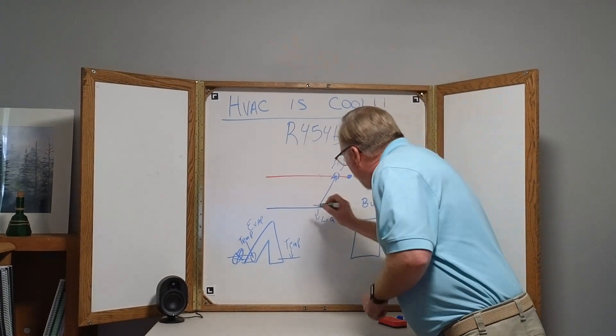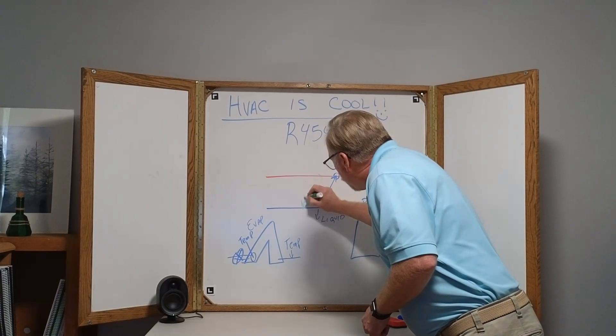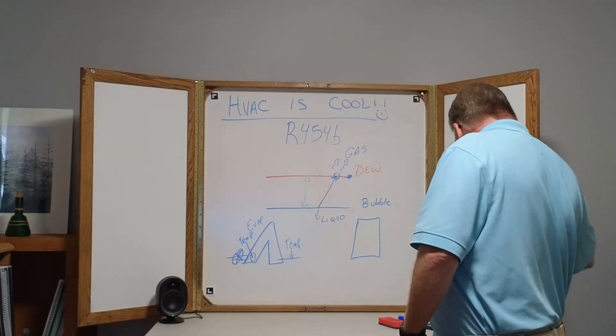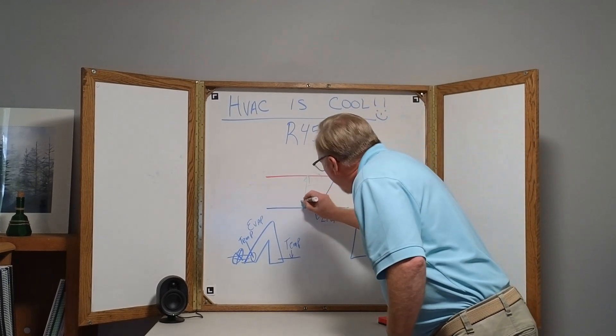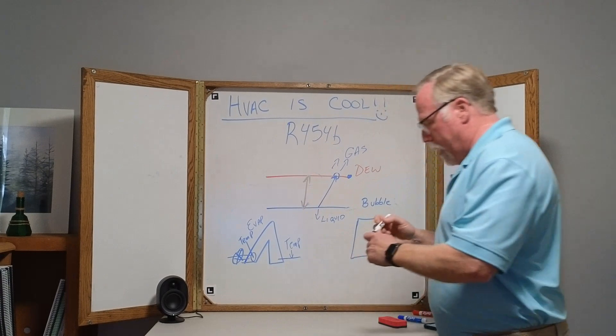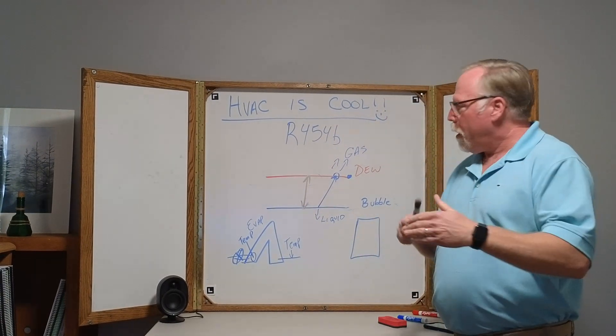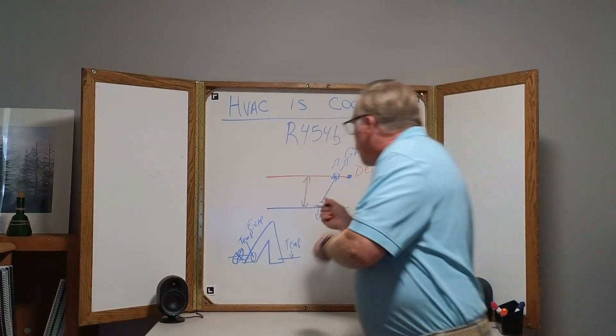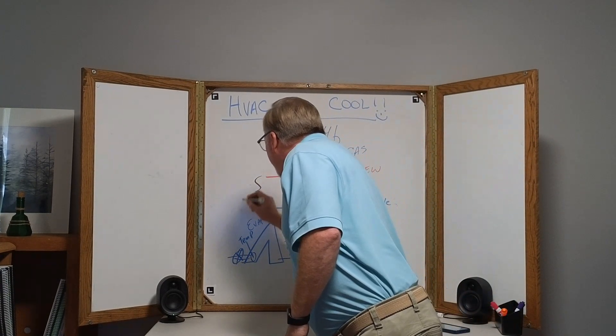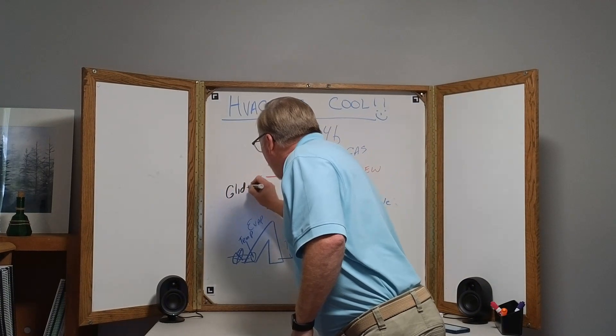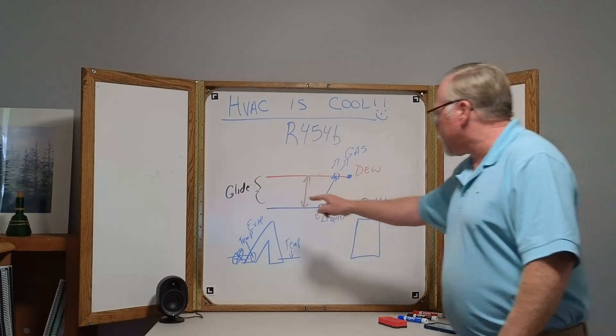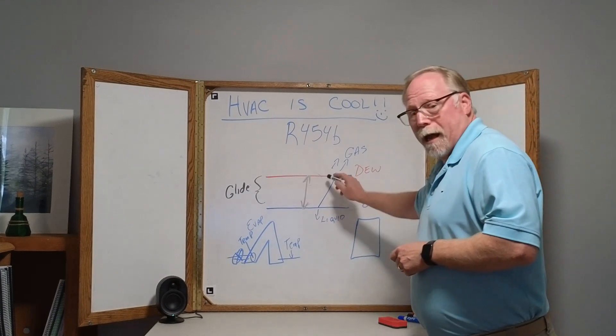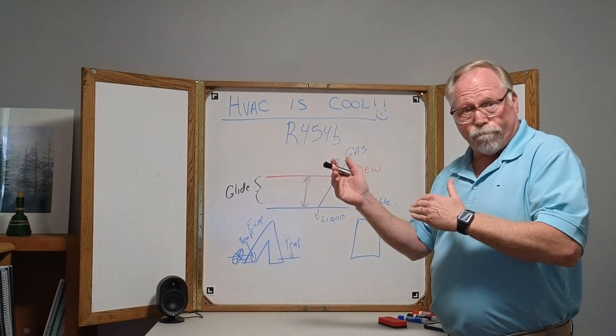In between bubble and dew point, anything in between those two lines, the bubble and the dew, the refrigerant is still changing phase. There's a glide now. That glide is happening between the bubble point and the dew point. This is the glide temperature. The pressures stay the same, by the way. It's just the temperature that's changing somewhat.